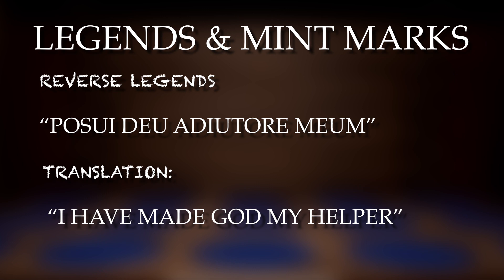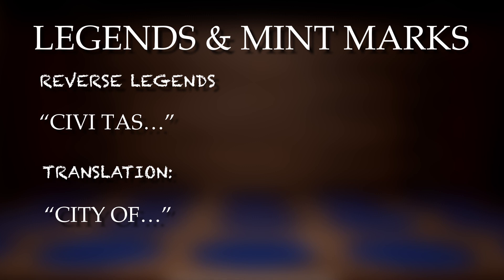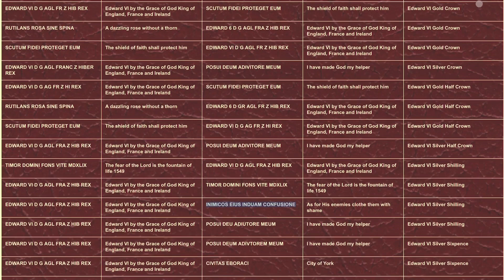Next we have 'As for his enemies, clothe them with shame.' The reverse legends found on the smaller denominations may have 'I have made God my helper,' or 'Civitas' and the name of the mint, translating to 'City of.' There is an incredible website called PS Detecting that covers and translates so many legends, mint marks, and what denominations they can be found on. Links will be below for you to do your own additional learning and research, and it's extremely helpful if you haven't got your Spink book to hand.